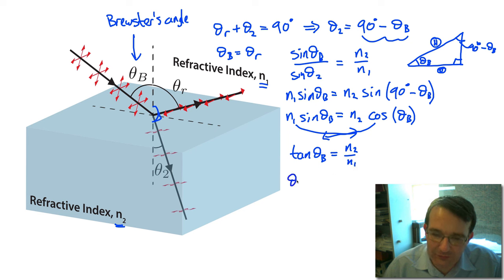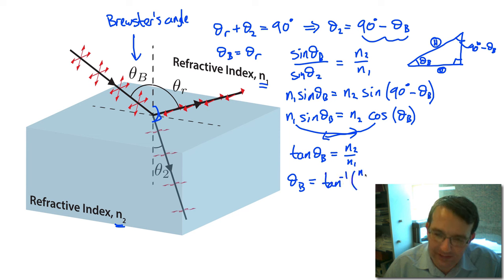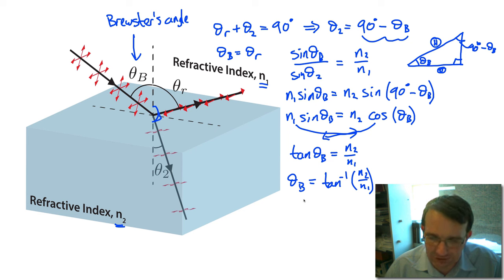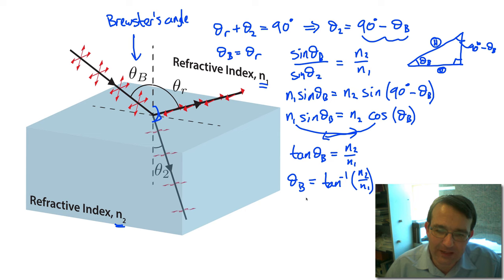Dividing both sides gives sine over cosine, which is the tangent. Therefore tan(theta_b) = n2/n1, and Brewster's angle is the inverse tangent of n2 divided by n1, where n2 is the refractive index of the new medium and n1 is the refractive index of the medium the light is originally traveling through. This allows us to calculate Brewster's angle for any boundary between two media.